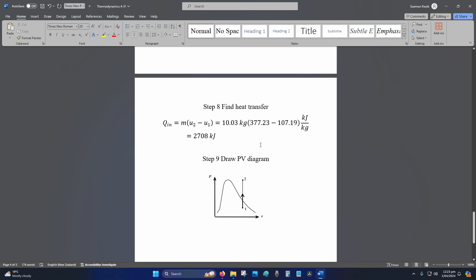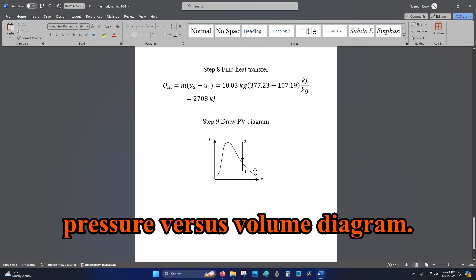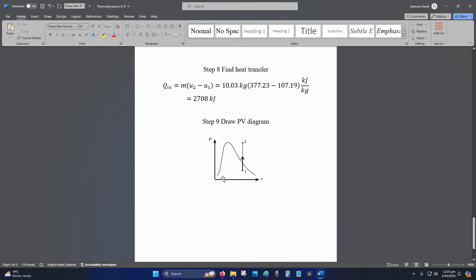Step 9: Draw your P-V diagram, that is your pressure versus volume diagram. This is your saturation curve. Your initial state starts from your saturated mixture, and then it becomes superheated in your final state.